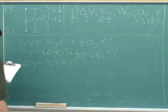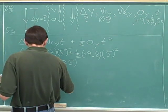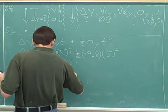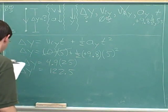Again, with our calculator, we can do 4.9 times 25. That turns out to be 122.5. Delta y equals 122.5.